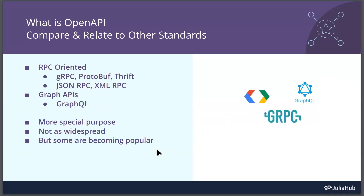There are also RPC-oriented protocols like gRPC, Protobuf, Thrift, and GraphQL for graph APIs. These have niche use cases and are more special-purpose than REST, which is why they're not as widespread. gRPC is typically used for performance-focused microservice setups, and GraphQL is used for accessing graph databases and data structures.